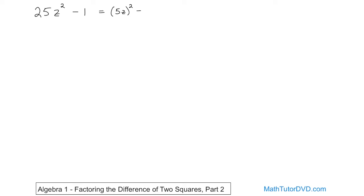Then I have a minus sign. Well, 1 is a perfect square — 1 times 1 is 1, so this is 1 squared. So now you have the difference of two things that are squares. So the way you factor it is very simple: 5z, the first term, without using the square, plus 1, then 5z minus 1. It's just the first term plus the second term, first term minus the second term.